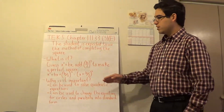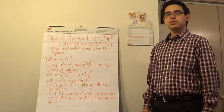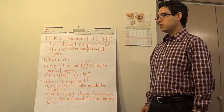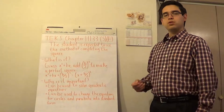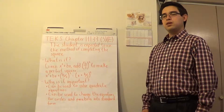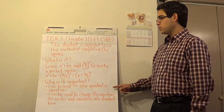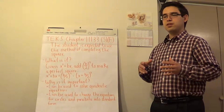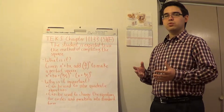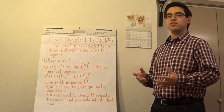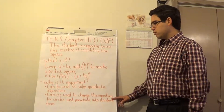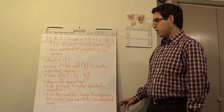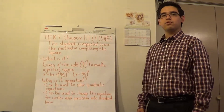Now why is it important to know how to complete the square? Well, it can be used as a method for solving quadratic equations. It's especially useful when factoring out the equation is either very difficult or very, very difficult. It can also be used to change the equations for circles and parabolas into standard form.